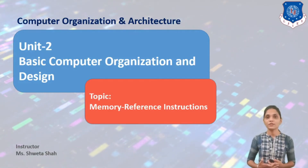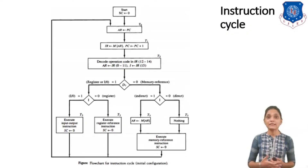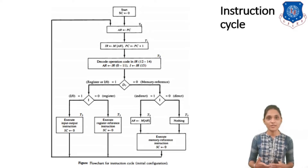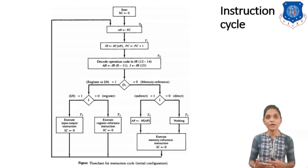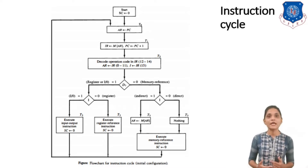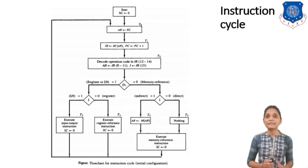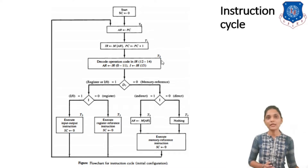Before starting with the topic, let me revise the instruction cycle. In the instruction cycle you are going to complete 4 tasks: fetching of the instruction, then decoding the instruction, then calculating the effective address or fetching the operand from the actual address, and the 4th thing is the execution of the instruction. Fetching and decoding of the instruction will be the same for all types of instructions, and this task is completed over timing signals T0, T1, and T2.